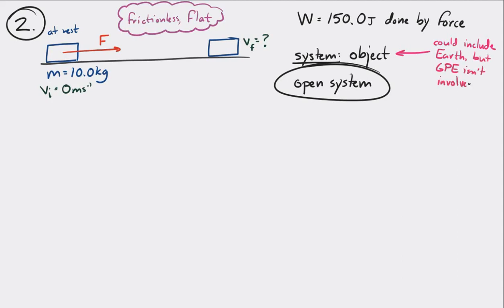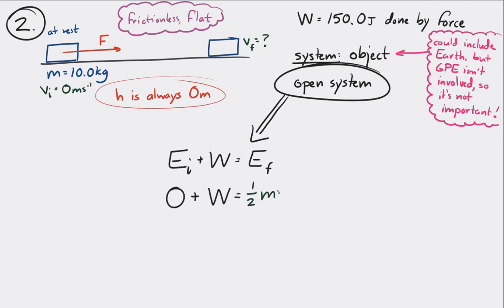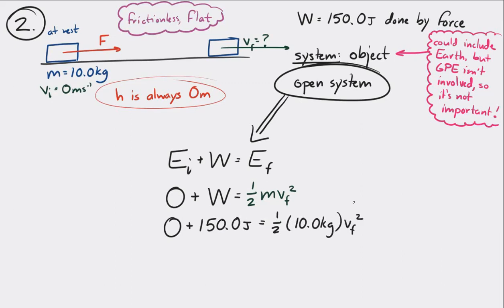The reason why it's not really important here to include the Earth is that there's no gravitational potential energy involved. The height never changes, so we can say the height is always equal to zero. We started out with no kinetic energy, you did some work, and that equals the final kinetic energy at the end. So, zero plus 150 joules equals one-half the mass times Vf squared. Solving for that final speed, you get 5.48 meters per second.